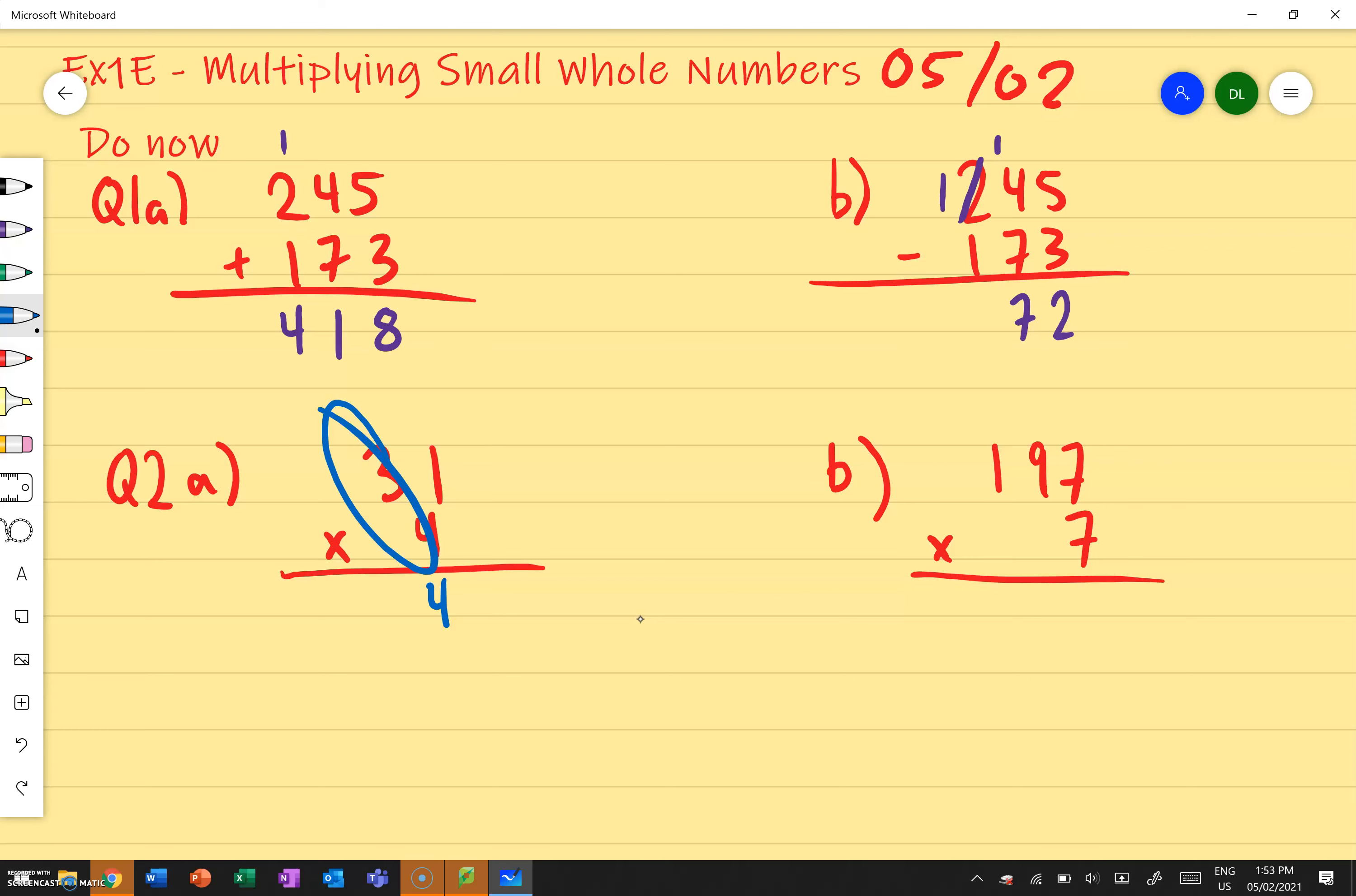Three times four gives me 12. Now am I done? Yeah, it looks pretty good to me. 31 times 4, we multiply by 4 and we get 124.